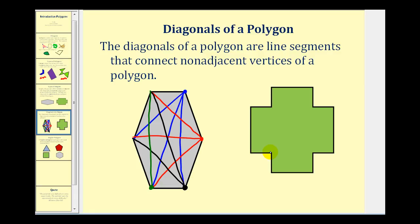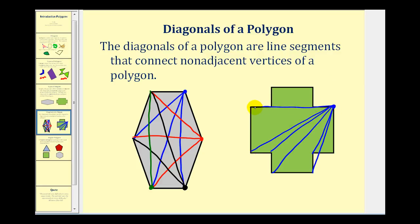Now for this polygon, let's go ahead and sketch the diagonals from one of the vertices. If we were to select this vertex here, this vertex and this vertex would be the adjacent vertices, so the diagonals would be the segments to the remaining vertices here, here, here, here, and so on. Some of these are hard to see because they do overlap. But what I want to point out is that notice some of the diagonals pass outside the polygon, whereas in our first example, all the diagonals were inside the polygon. So these two polygons represent two different types of simple polygons.